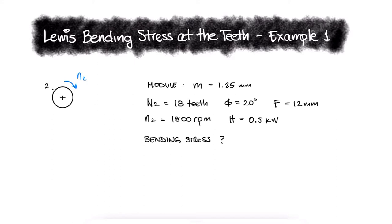This is the first example for the Lewis bending stress at the teeth main video. The link to that video is in the description below. To calculate the bending stress, we'll need the velocity factor, the tangential component of the force at the teeth Wt, and the Lewis form factor capital Y.